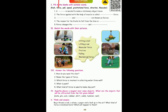Second question: the force applied with the help of muscles is called muscular force. Third question: the dash and dash are known as forces — push or pull. Fourth question: the reason for the fruits to fall from the tree is gravitational force. Fifth: force changes the speed and direction.